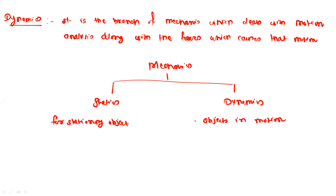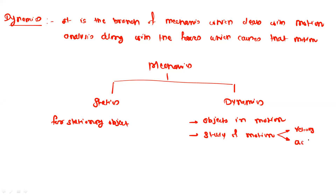Basically, dynamics is the study of motion. So what is exactly motion? Motion is defined with different parameters. The common parameter to describe motion is velocity — when an object is moving it will have some velocity. The second parameter is acceleration: if the object is in motion and its velocity is continuously increasing or decreasing, then it will have some acceleration.